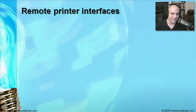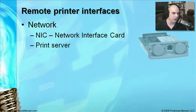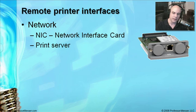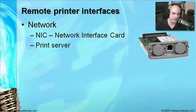If the printer or scanner is not connected directly to your device, there are other ways to connect through a remote interface. One of the most common is networking. There's a network card physically connected inside the printer or scanner — a network interface card, or NIC. Inside the printer is very often a print server, so you don't need any additional hardware or server. You just take your Ethernet connection, plug it into the RJ45 jack on the back of your printer, and your printer becomes available on the network, visible through the Windows printer front end.